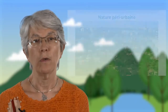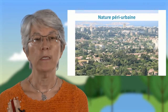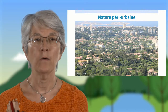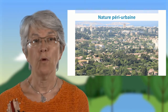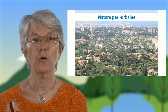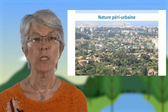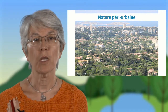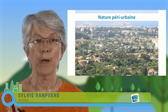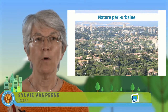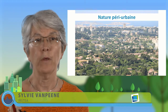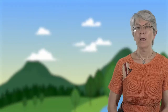On pourrait penser que les milieux urbanisés sont très défavorables aux espèces, et en fait pas forcément. On voit ici, par exemple, sur une vue de la frange nord de Marseille, que la végétation s'approche très près du cœur de ville, avec les parcs publics, mais aussi énormément avec les jardins privés. Et cette végétation permet le déplacement d'un certain nombre d'espèces.